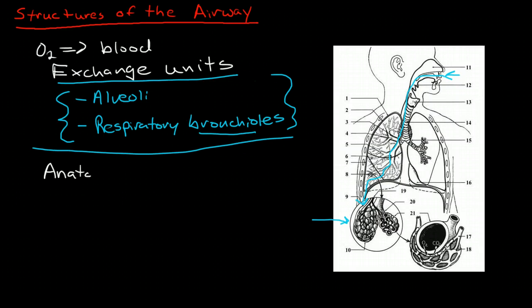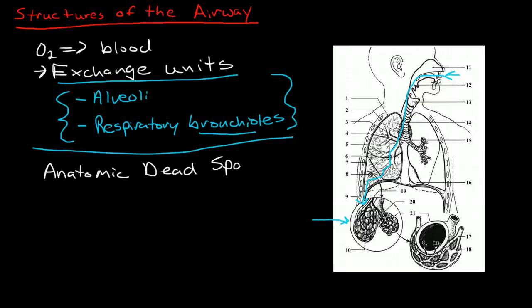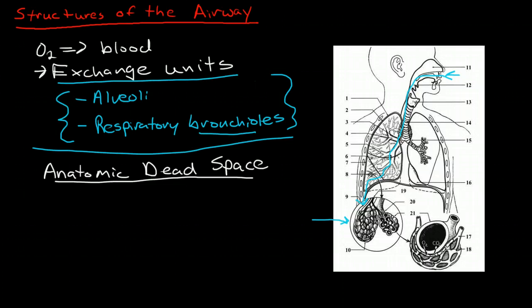And it's called anatomic dead space because in terms of gas exchange it has no role at all. It is inert and dead. So anatomic dead space means that these are parts of the lung in which no gas exchange can occur.